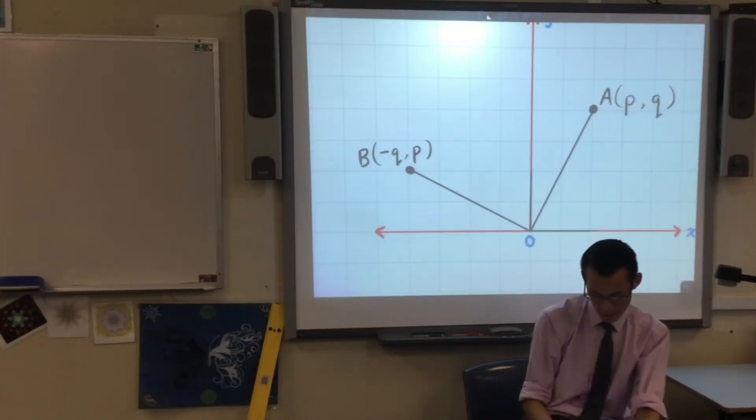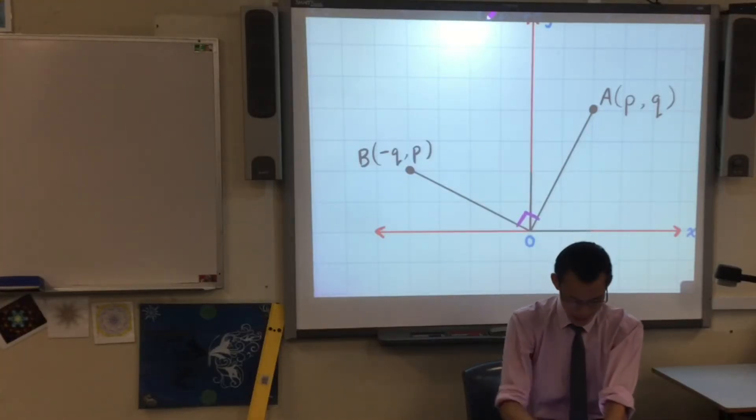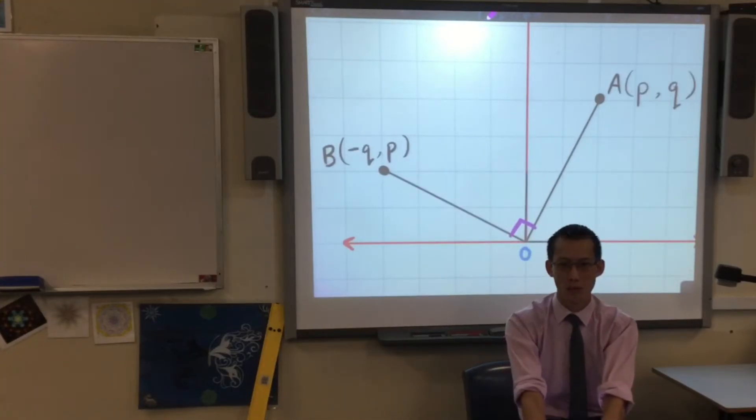So, now what I've got, and you can add this in, now what I've got is, let's go purple, I've got two lines that are perpendicular to each other. They meet at right angles, right there.